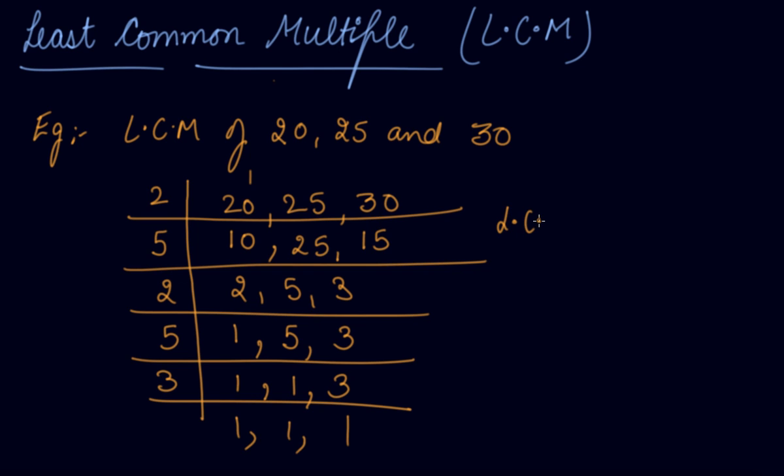The least common multiple of the numbers will be 2 × 5 × 2 × 5 × 3. Taking the product of all these divisors, we will get the least common multiple, which is 2 × 5 = 10, then 10 × 10 × 3 = 300. So the LCM is 300.